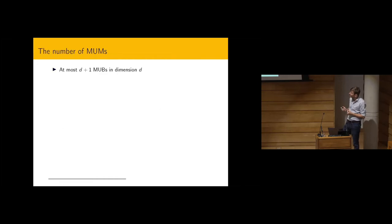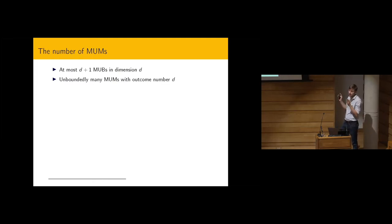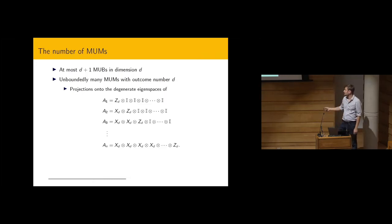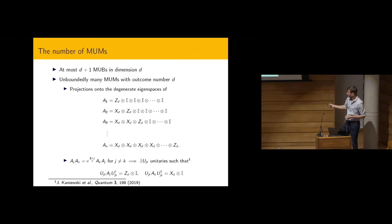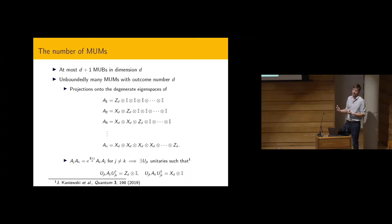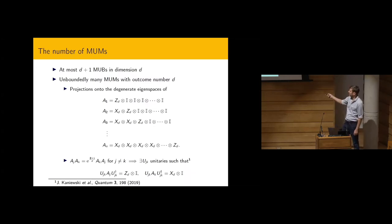MUMs are also different in the sense that in dimension d you can find at most d+1 MUBs, but for MUMs with a fixed outcome number d, you can find as many as you want by increasing the dimension. You take N unitaries built from the generalized X and Z operators — these have degenerate eigenspaces, and the MUMs are projections onto these eigenspaces. Any two of these unitaries satisfy the same commutation relation as X and Z, so they satisfy MUM conditions pairwise.